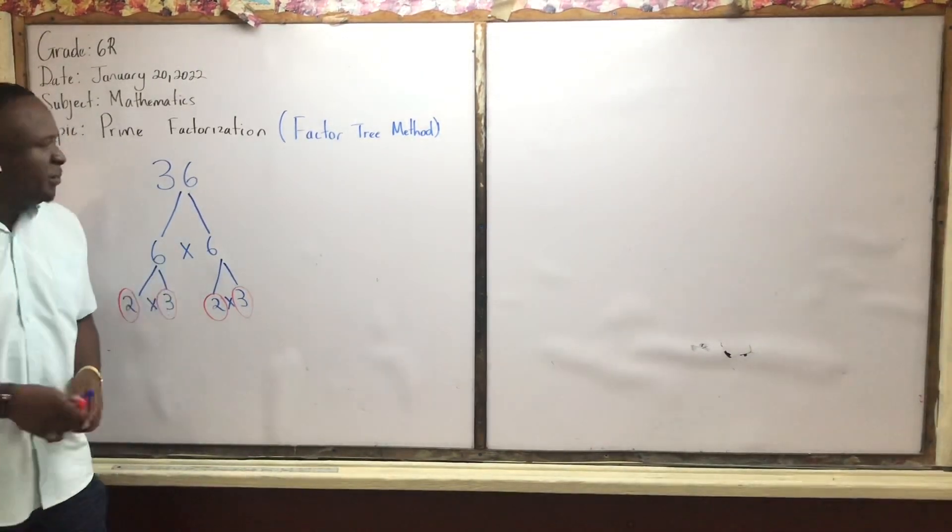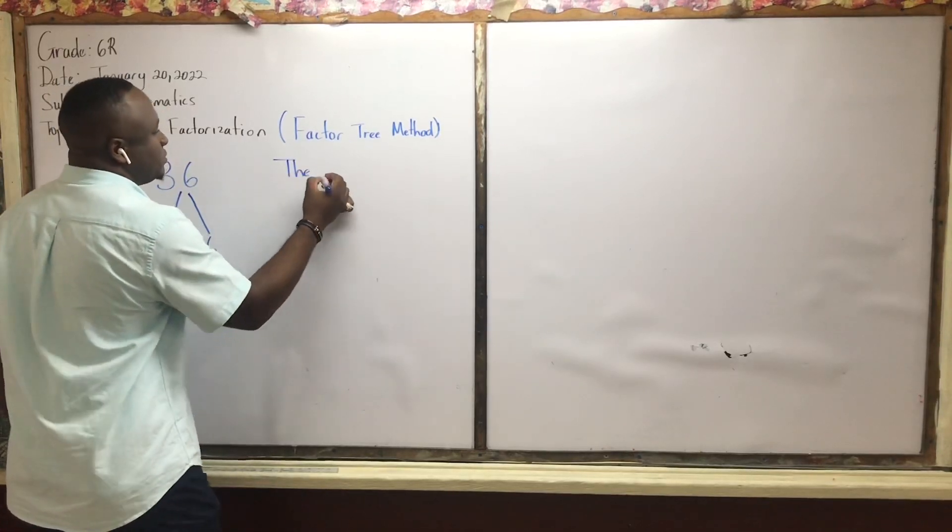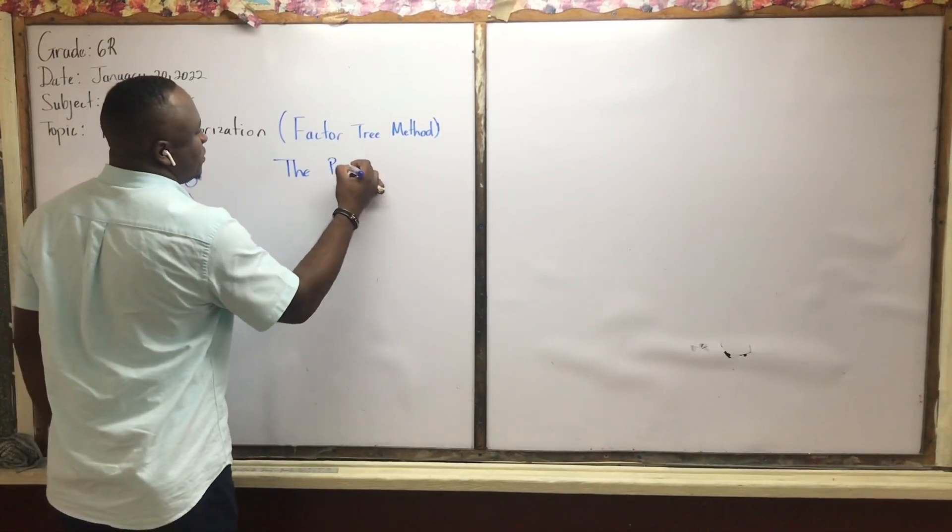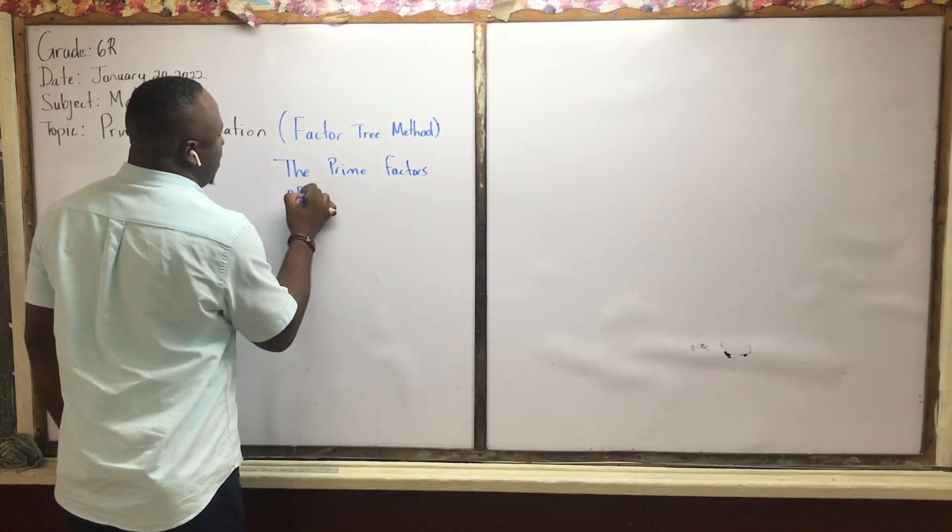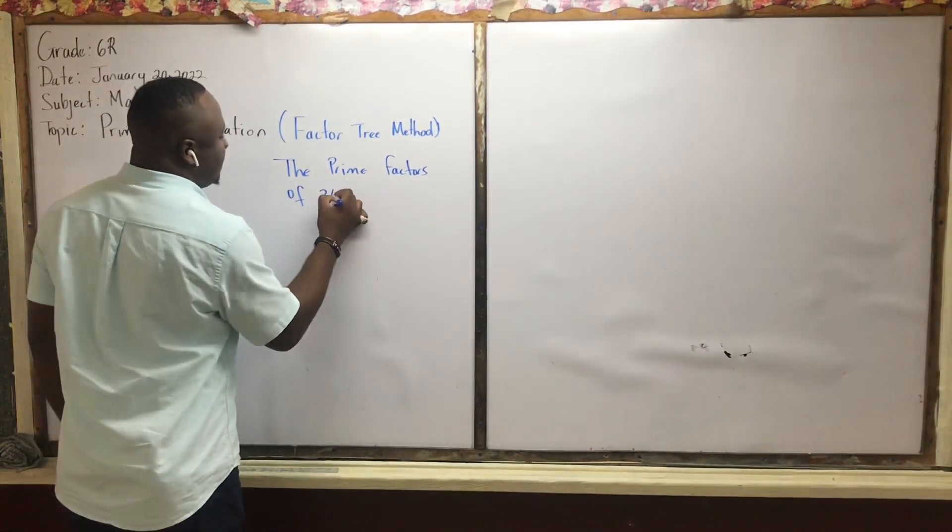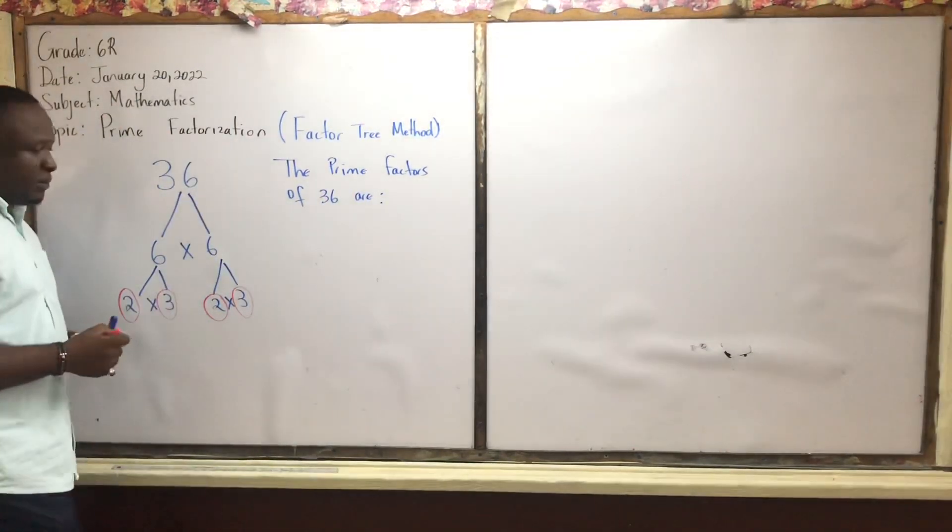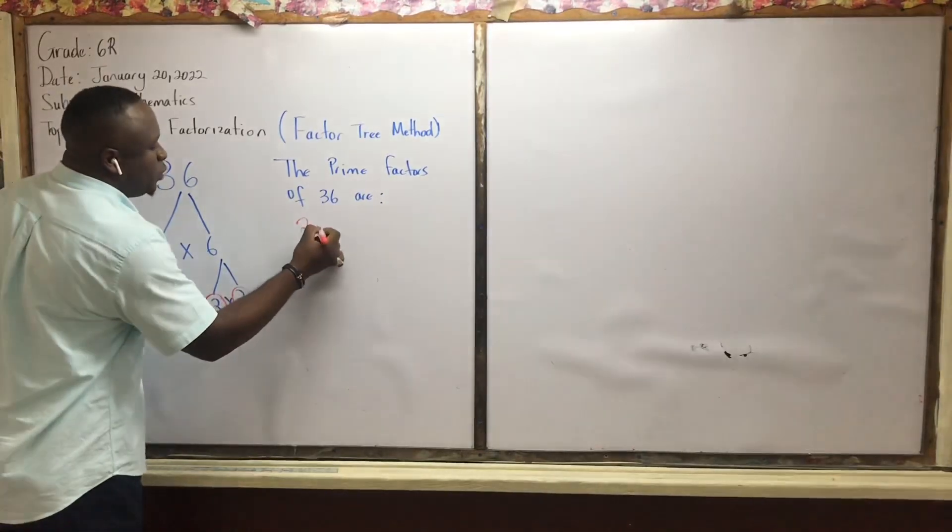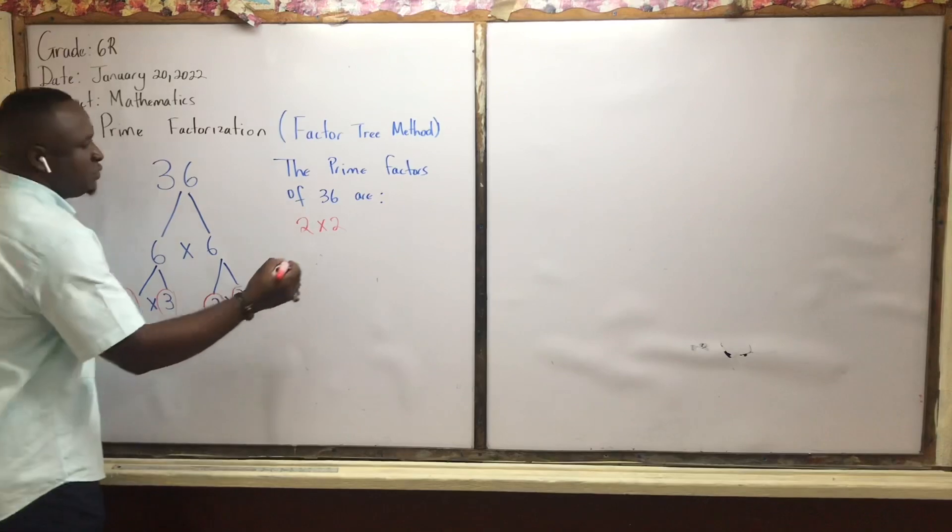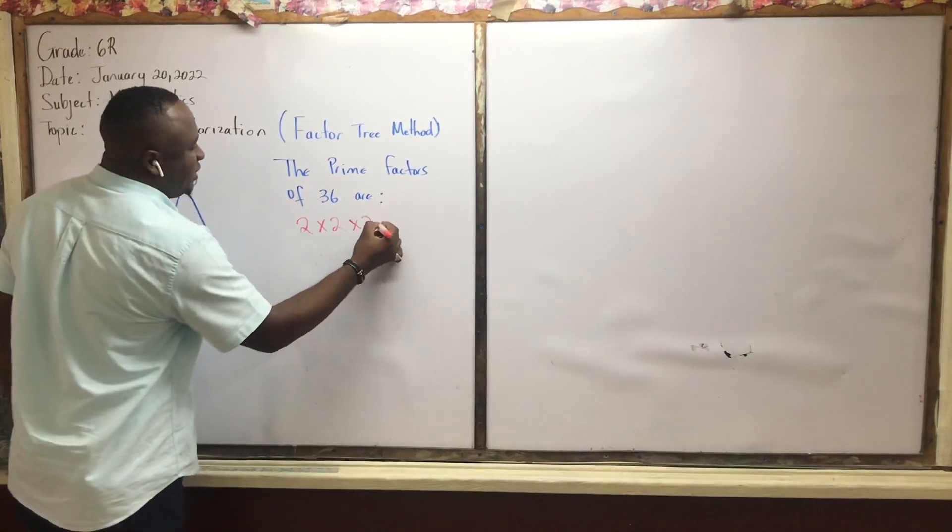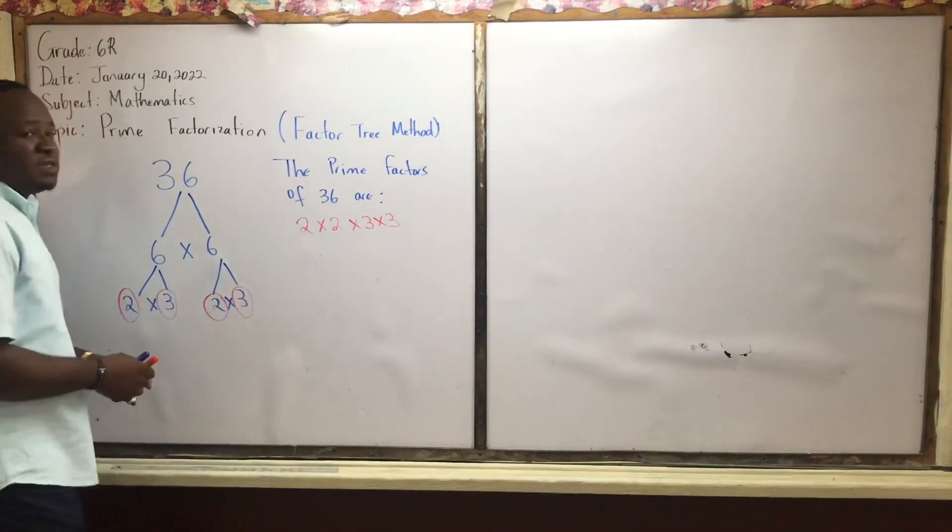So the prime factors of 36 are, and we are going to list them out. We have 2 times 2. You realize you have two 2's here. 2 times 2 times 3 times 3. So these are the prime factors of 36.